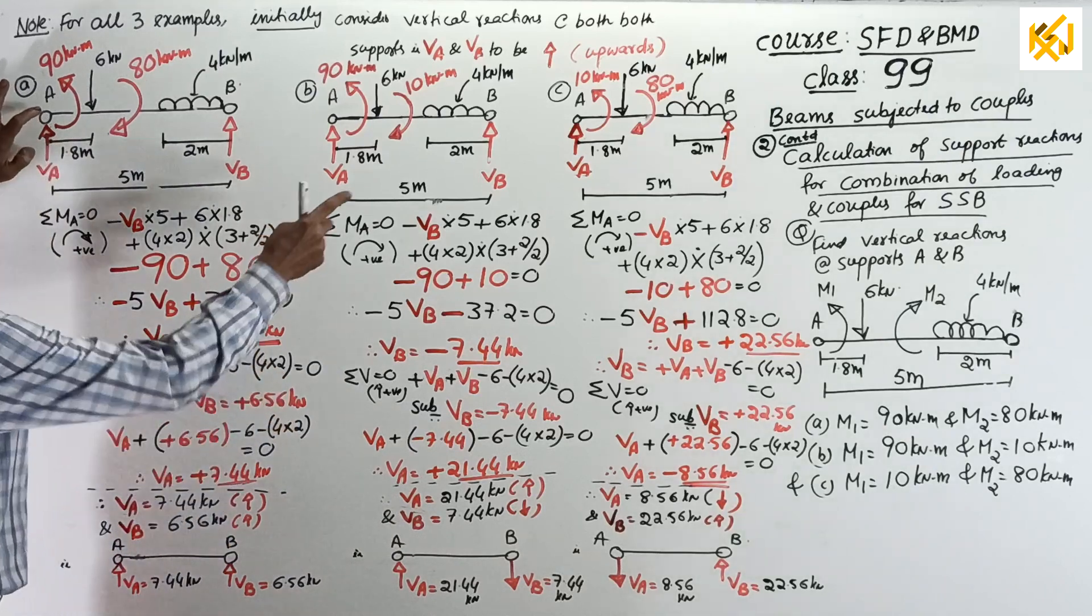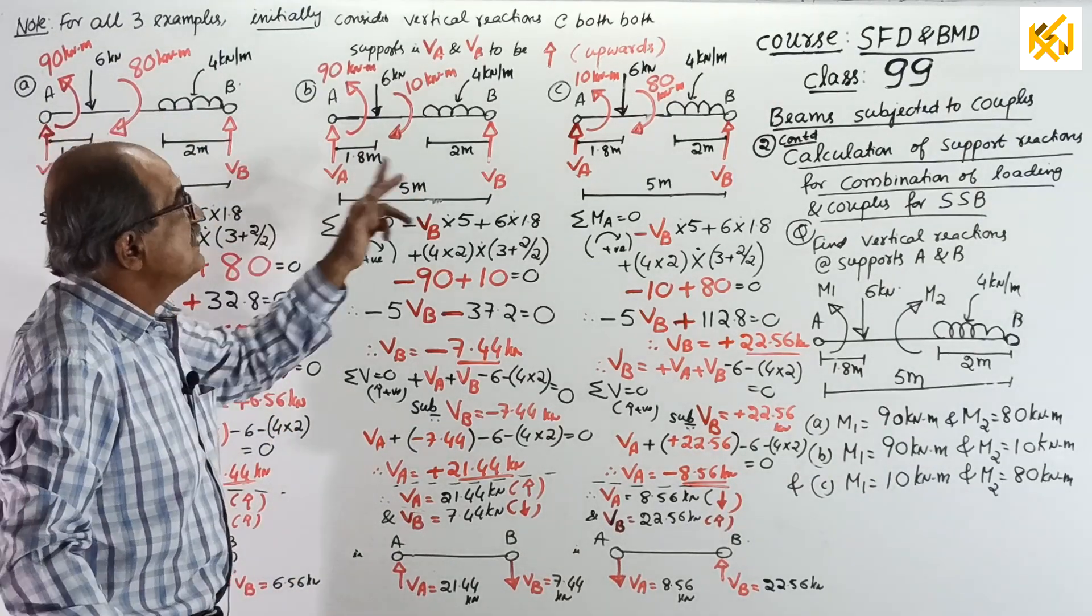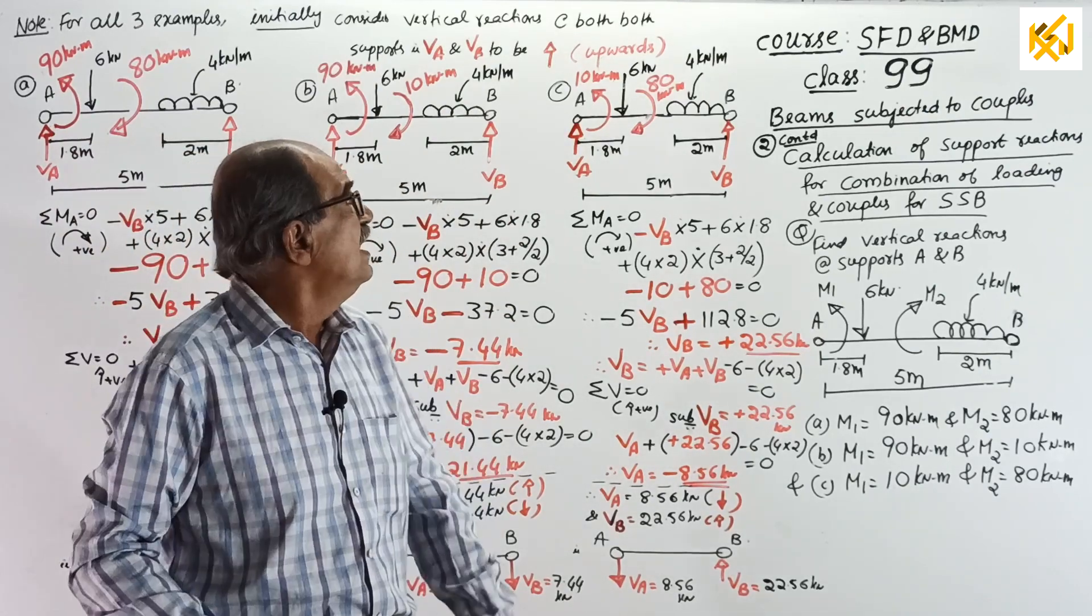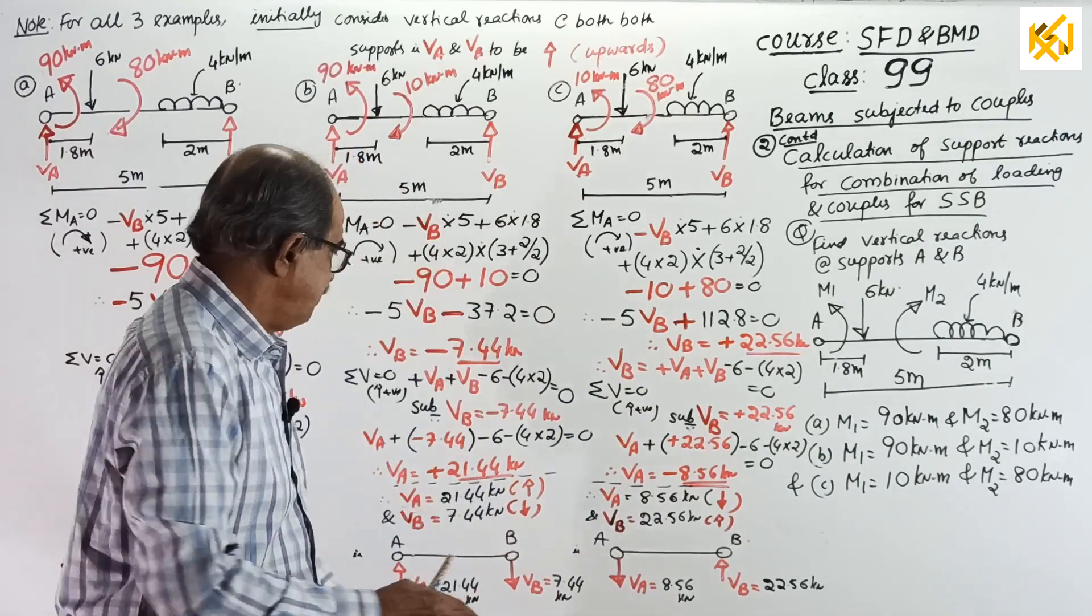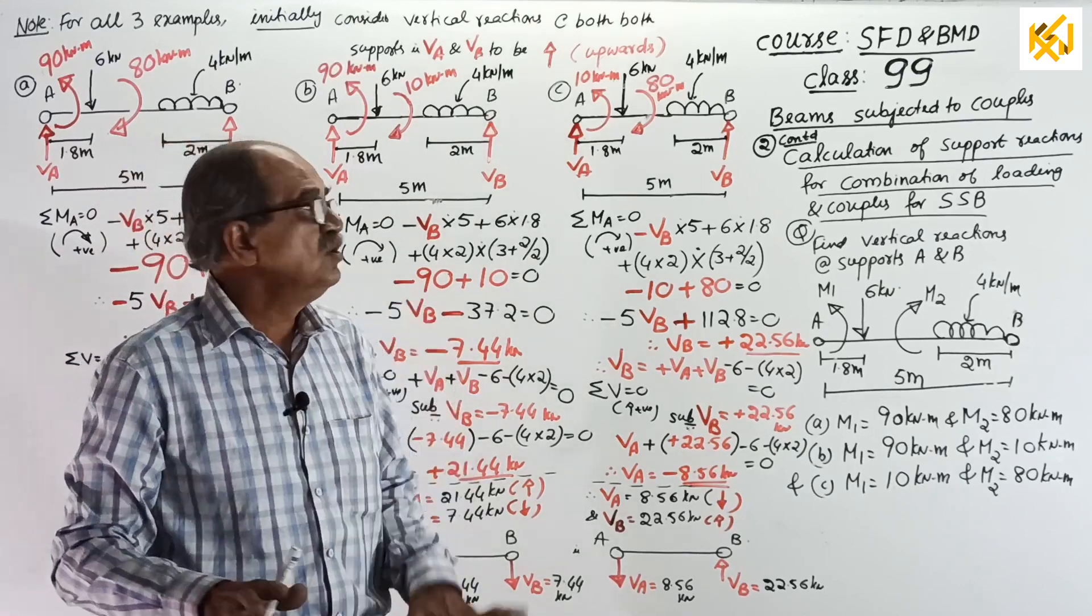So, there is no point in telling repeatedly the same thing again and again. So, all three reactions, all three examples, I will assume reactions to be vertically up. Okay. Now, start. See, all three questions you can see here. And one more thing. Further explanation will be given in class 101.